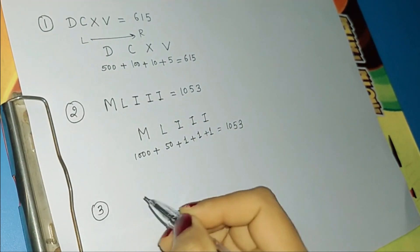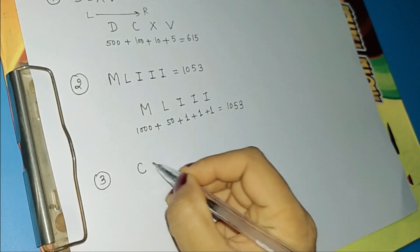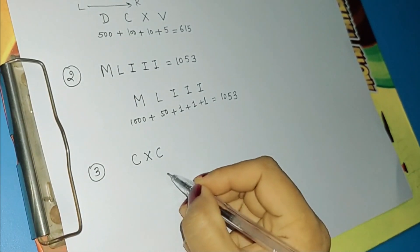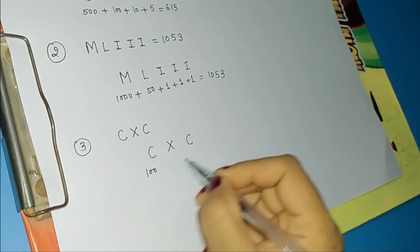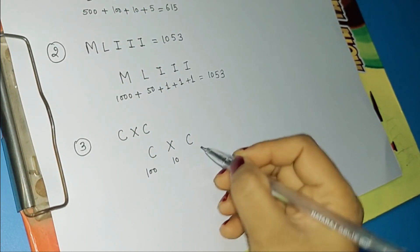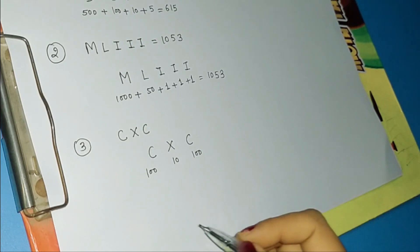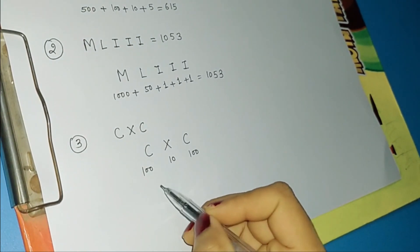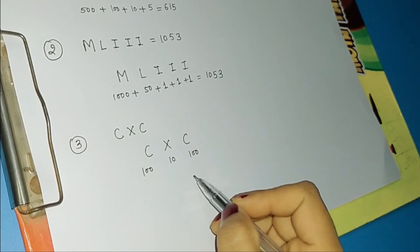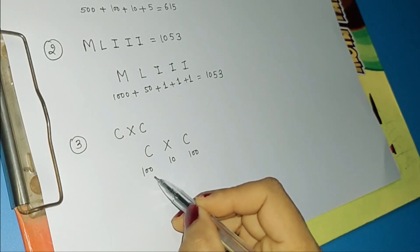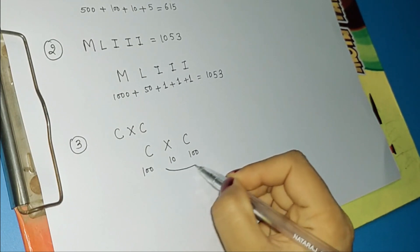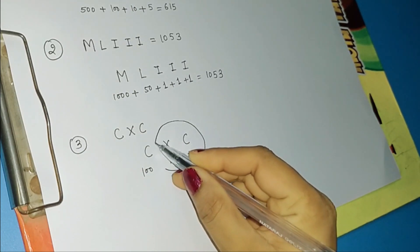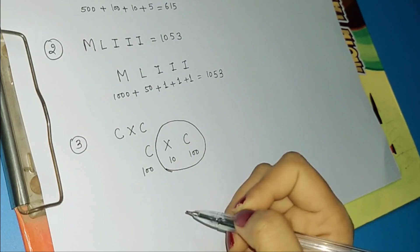Let's take another example: CXC. We write down the equivalent values: C is 100, X is 10, and C is 100. Now the numbers are not in descending order — 100 then 10 is okay, but after 10, the next 100 is not okay. So we need to find the sequence changer. Here X and C are the sequence changers.